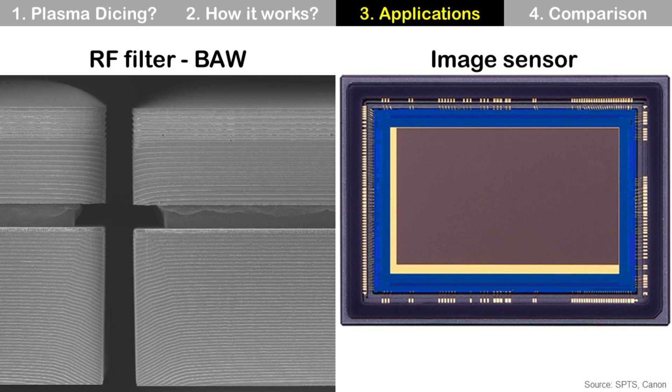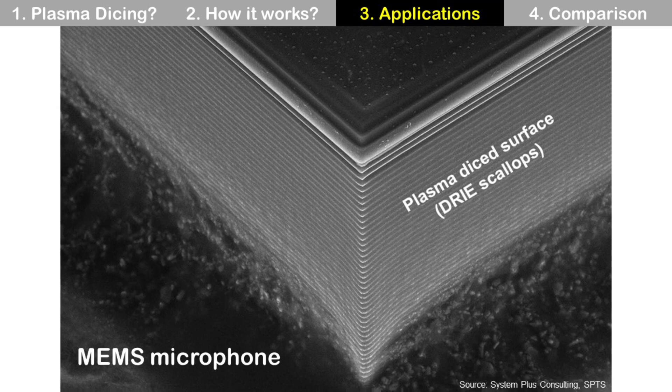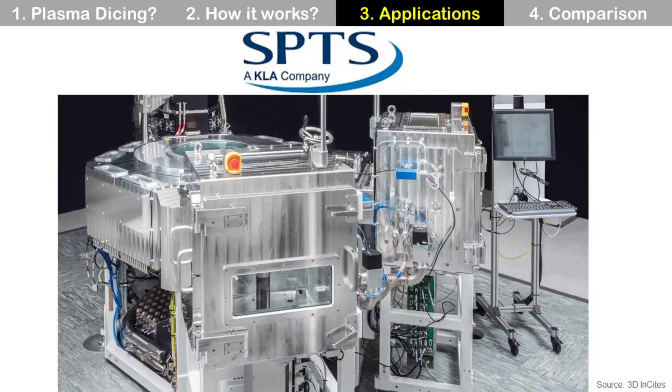Another application is for image sensors, which are sensitive to particle contamination. MEMS dies are sensitive to mechanical stress, so they are also good applications of plasma dicing. This is a plasma dicing machine from a company named SPTS, a subsidiary company of KLA. Plasma dicing machines are also available from other companies like Panasonic and Plasma Therm.